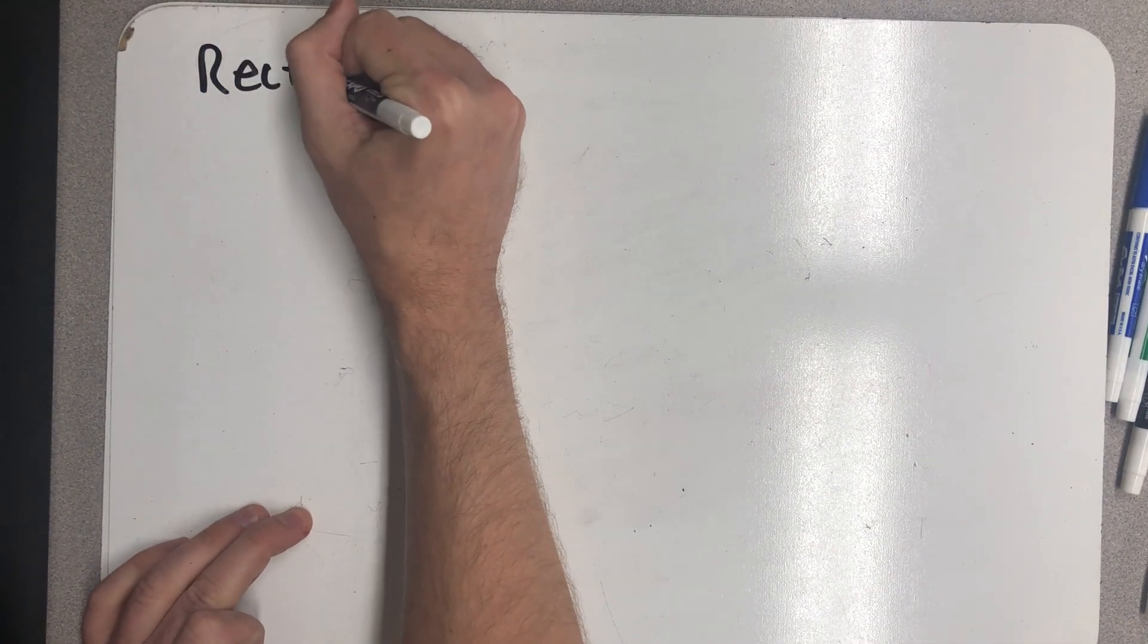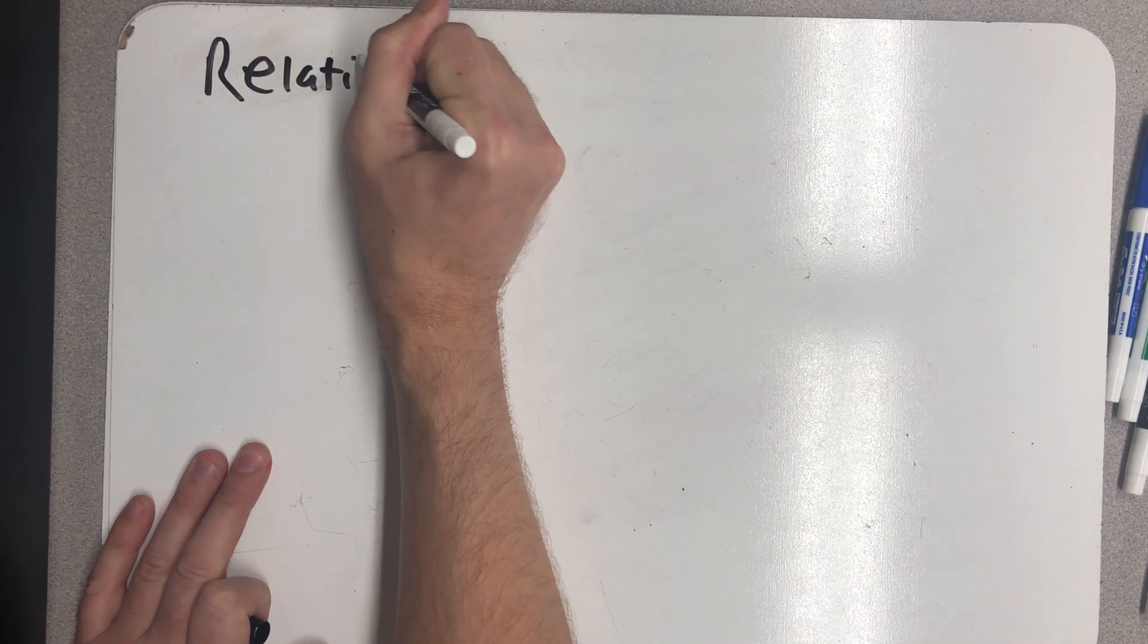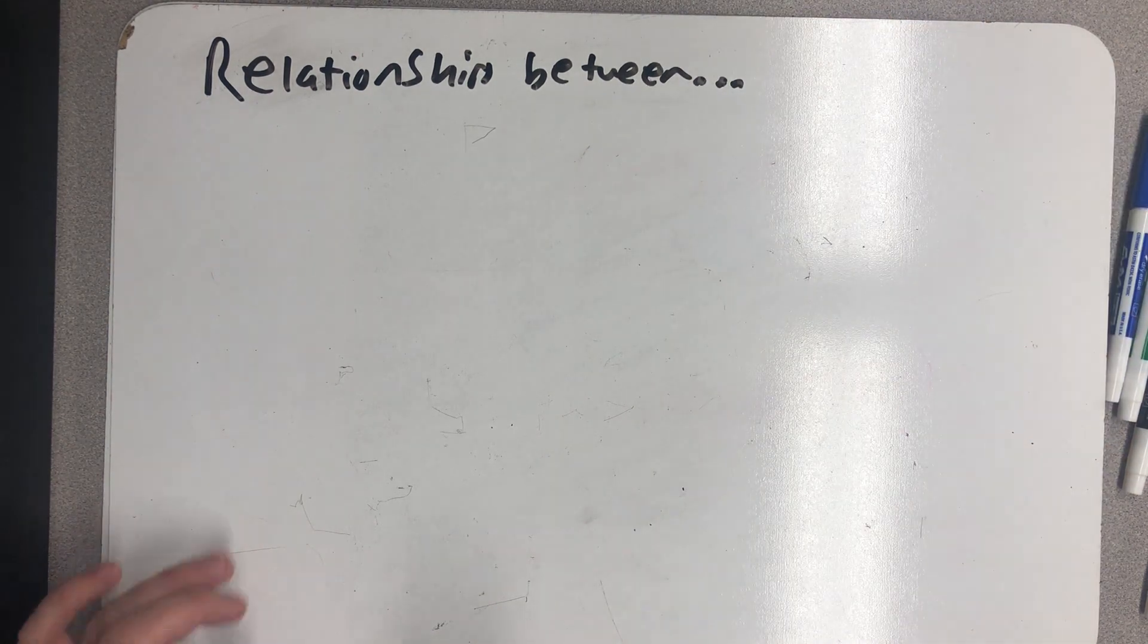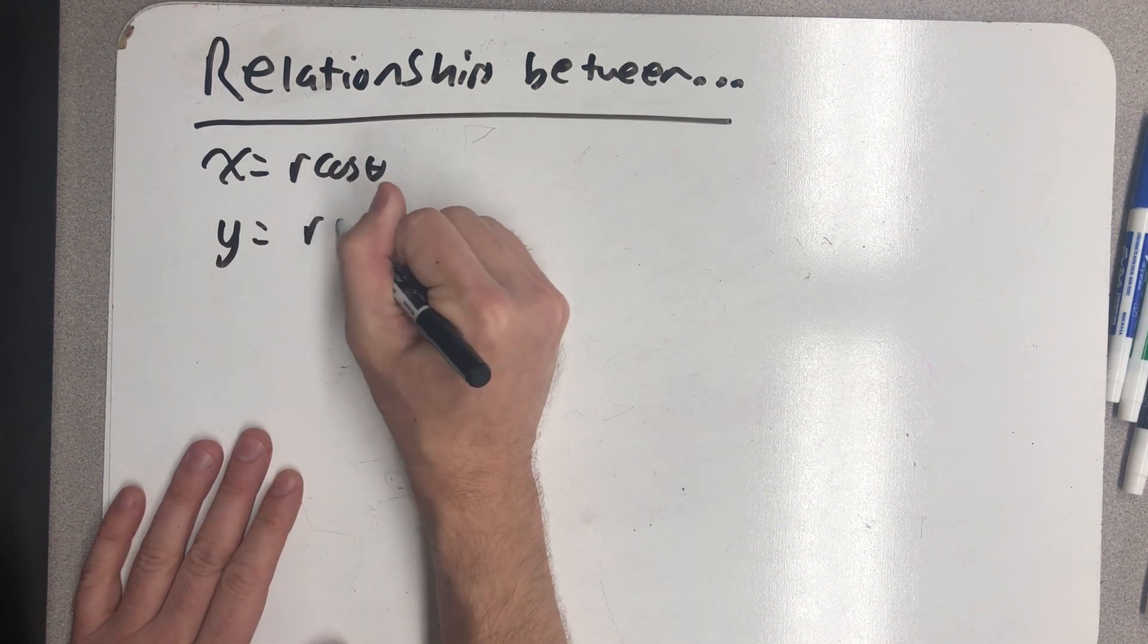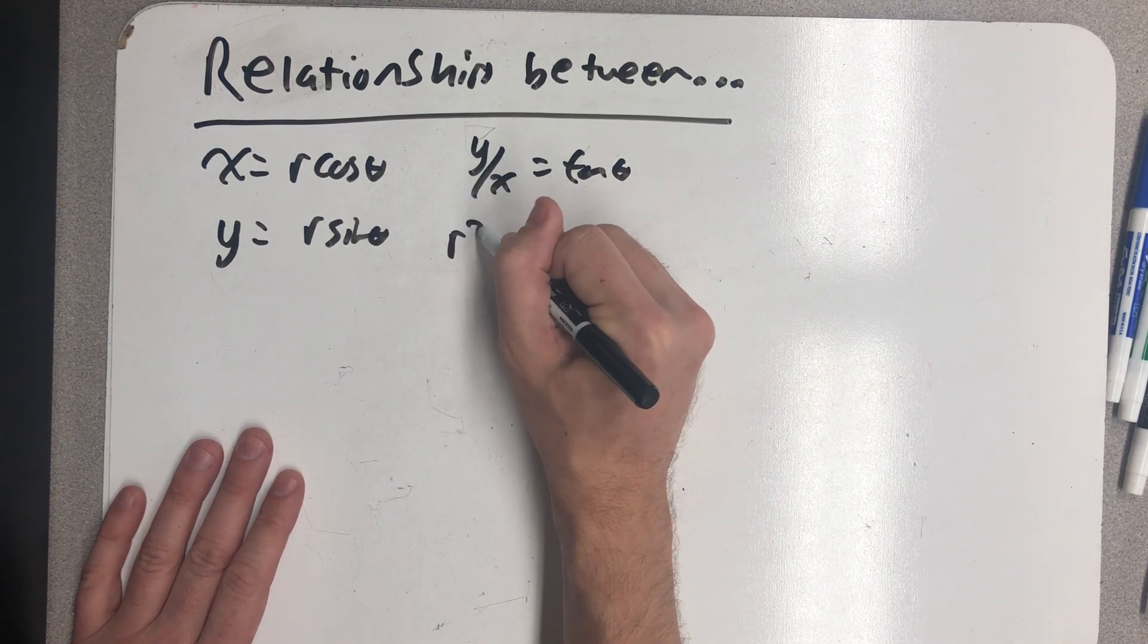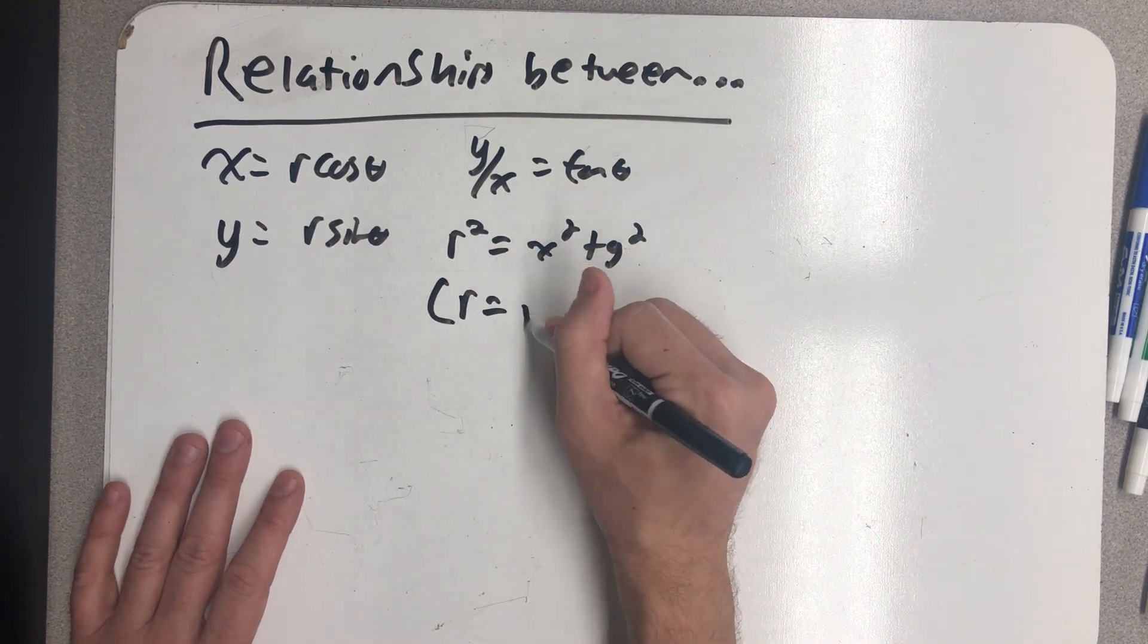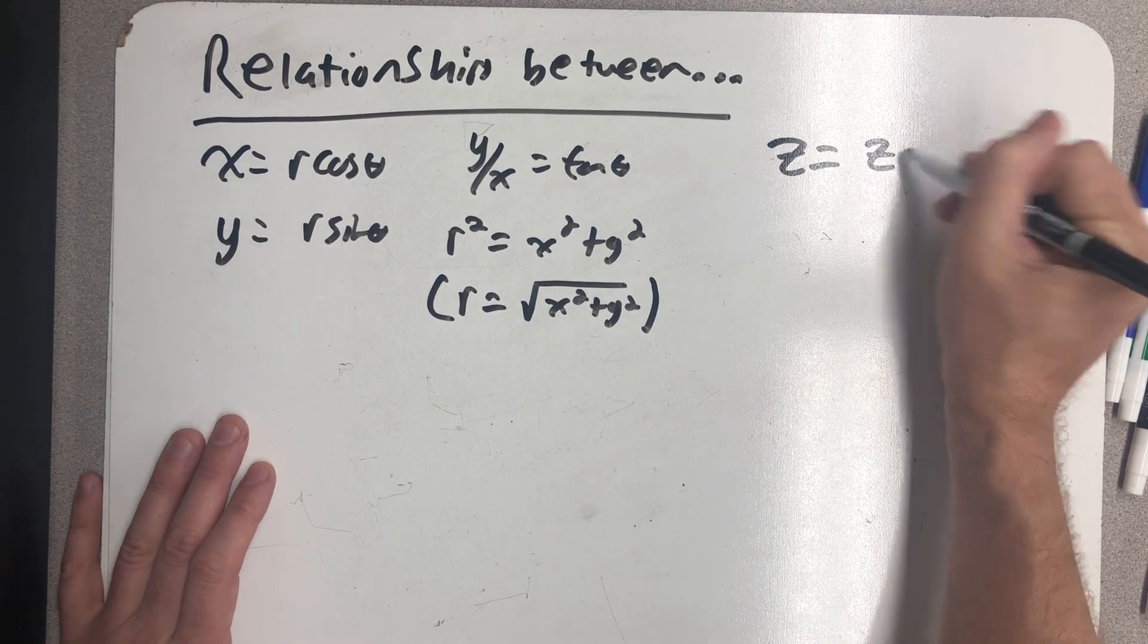So before we wrote down a bunch of relationships between rectangular and cylindrical coordinates. What I want to do now is add one. Before we wrote down that x was r cos θ and that y was r sin θ. If I took the quotient of y and x, I get tan θ. I like writing that r² is x² plus y². In the previous video, we talked about that here we're actually considering r to be positive, so we can actually reduce that to a square root. We also know that z equals z.